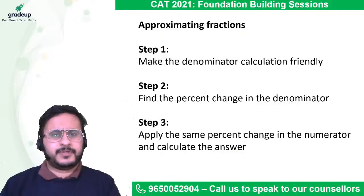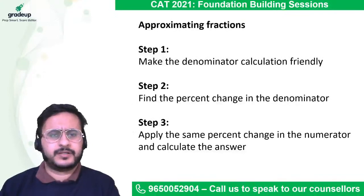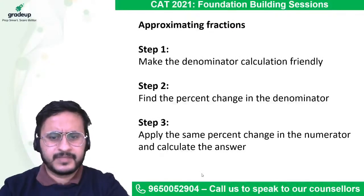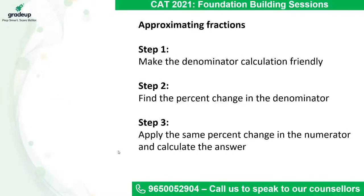Another important thing in percentages is approximation of fractions. Suppose you have to calculate some random value upon 4772 and find the approximate percentage. The first step is to make the denominator calculation-friendly. Can you divide by 4772? No one knows the table of 4772, but we know the table of 5. I can easily divide a number by 5. So what I do is make the denominator calculation-friendly — say, 5000.